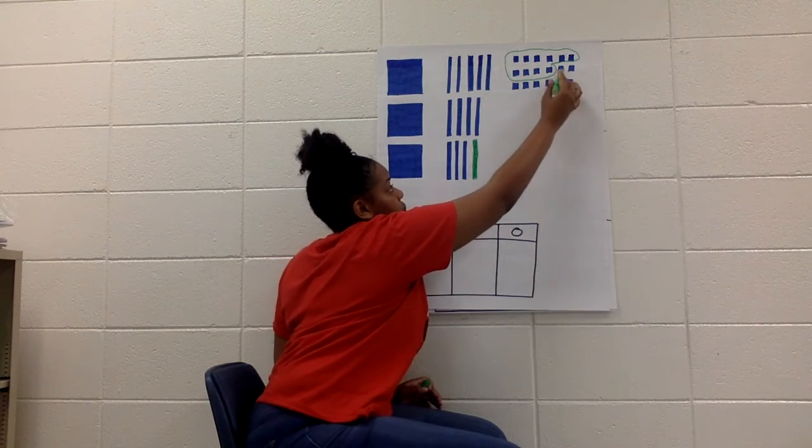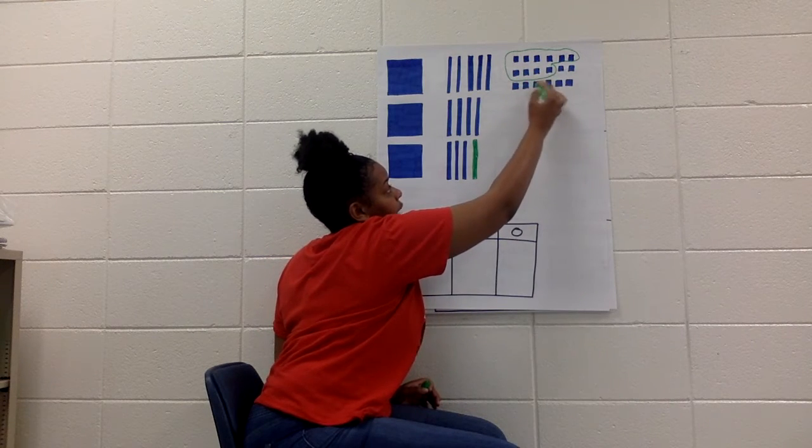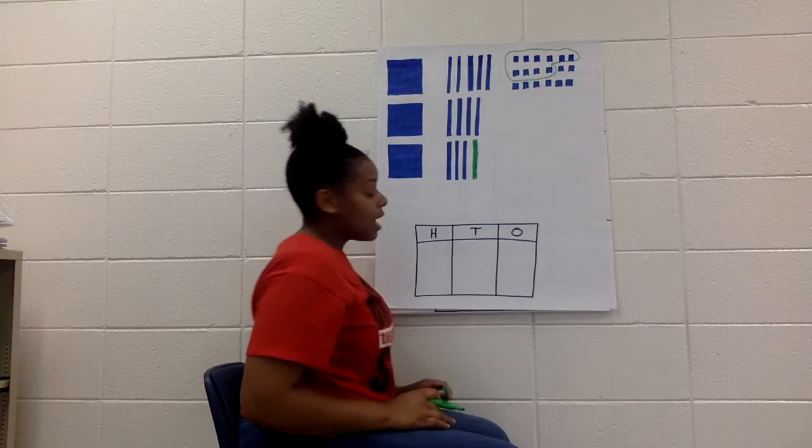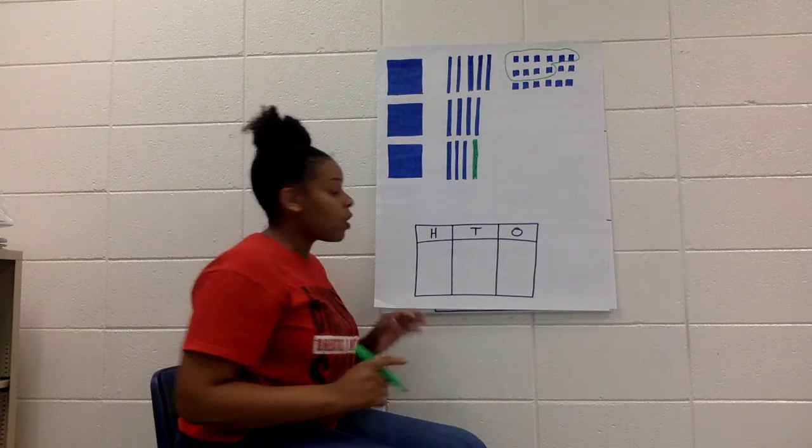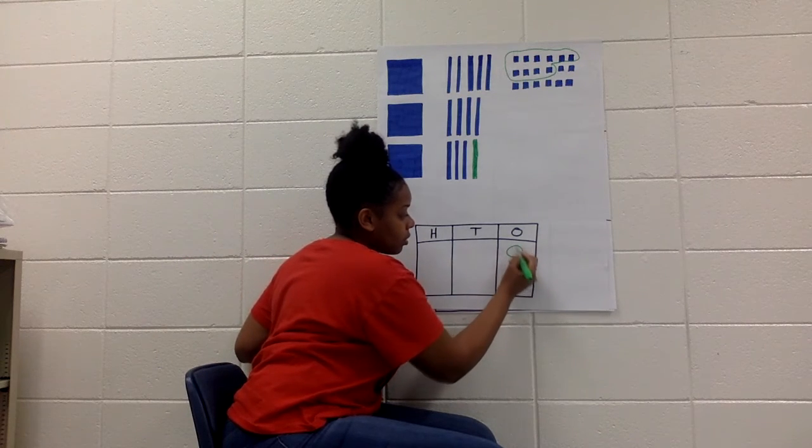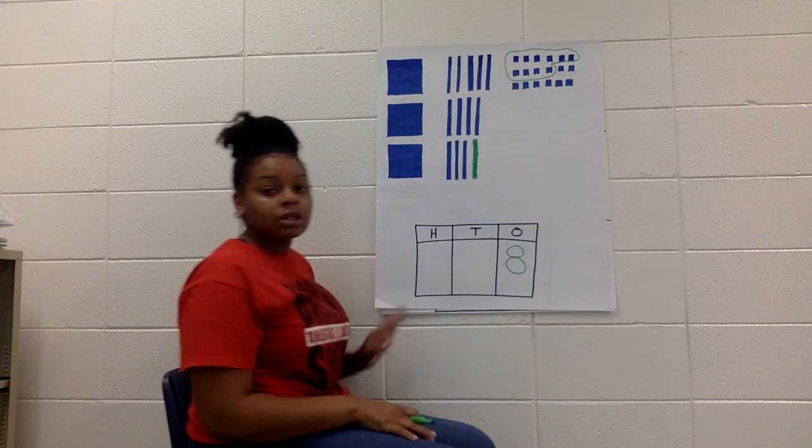Now I'm going to keep counting. 1, 2, 3, 4, 5, 6, 7, 8. I don't have enough to make another 10, so I'm just going to stop there. I have eight ones. So eight goes in my ones place.